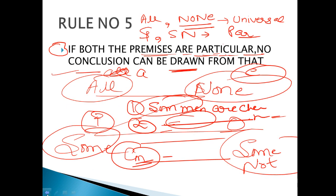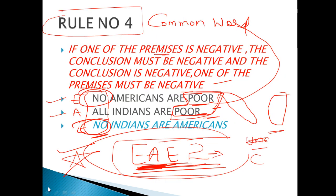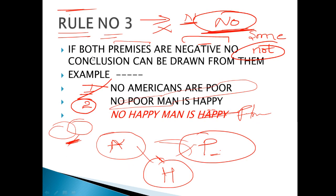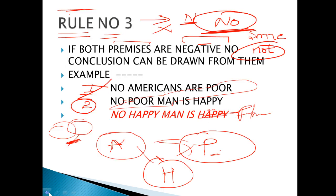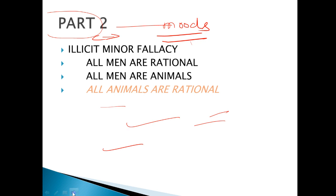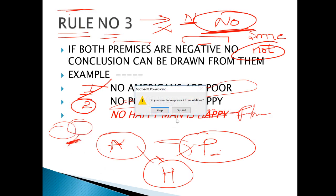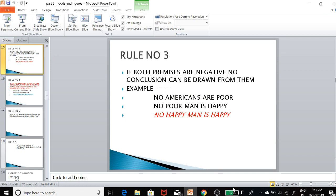Recap: अगर दोनों premises particular हैं — कोई conclusion draw नहीं होगा। अगर एक premise negative है — conclusion भी negative होगा। अगर दोनों negative हैं — कोई conclusion draw नहीं होगा। यह हमारे 6 के 6 rules थे। Next video में question-answer practice करवाऊंगी। Stay tuned — thank you guys for watching, this was all about today's class।